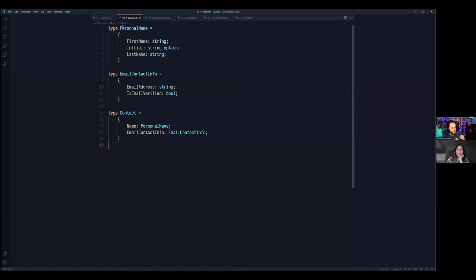There are now three types related data is now grouped into their own types. So we have the first type called personal name containing name related data. And there's also the type email contact info containing the mail address and the Boolean flag. Contact then wraps those two types. This was a little improvement, but still not any arbitrary string is a name or an email address. So let's fix that too.